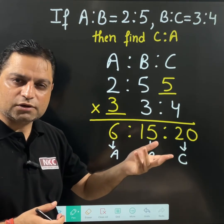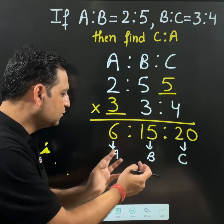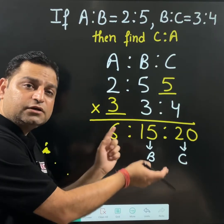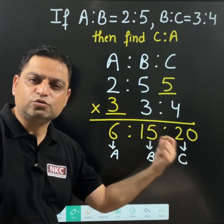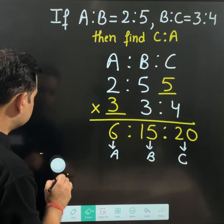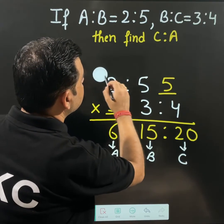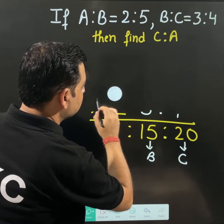So that any type of ratio comes like A ratio B if they ask, you can take two values. B ratio C they ask, you can take the next two values. Like here in this question, I am asked to find C ratio A. Now I am cleaning the board till this step.